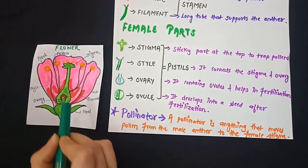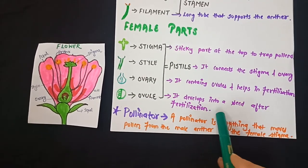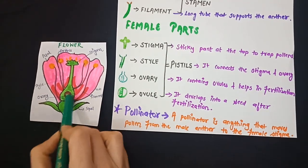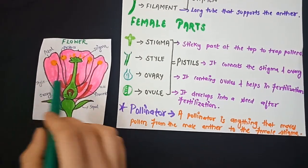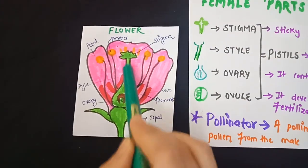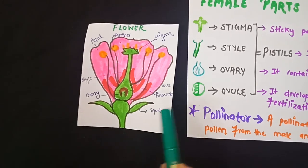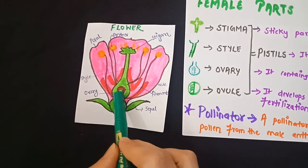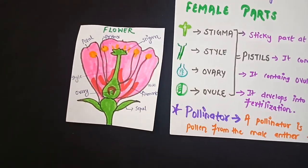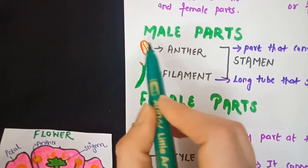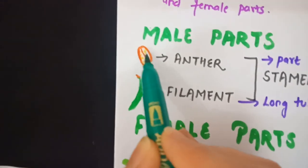The last part is the ovule — it develops into a seed after fertilization. When the fertilization process takes place inside the ovary, the pollen goes inside through the stigma via the filament tube, fertilization takes place, and a new seed develops just because of the ovule. Observe the diagram very carefully.